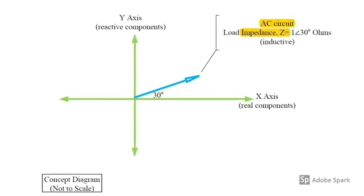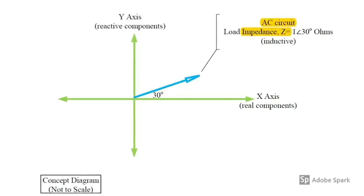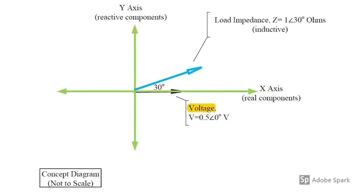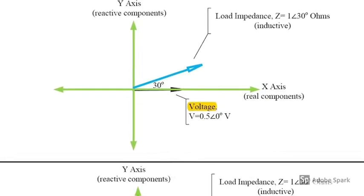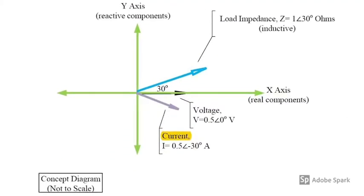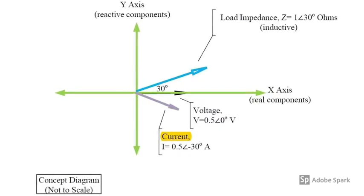The load impedance is 1 ohm at 30 degree angle. When we have AC voltage at 0.5 volt at 0 degree angle, the current is 0.5 amps at minus 30 degree angle.